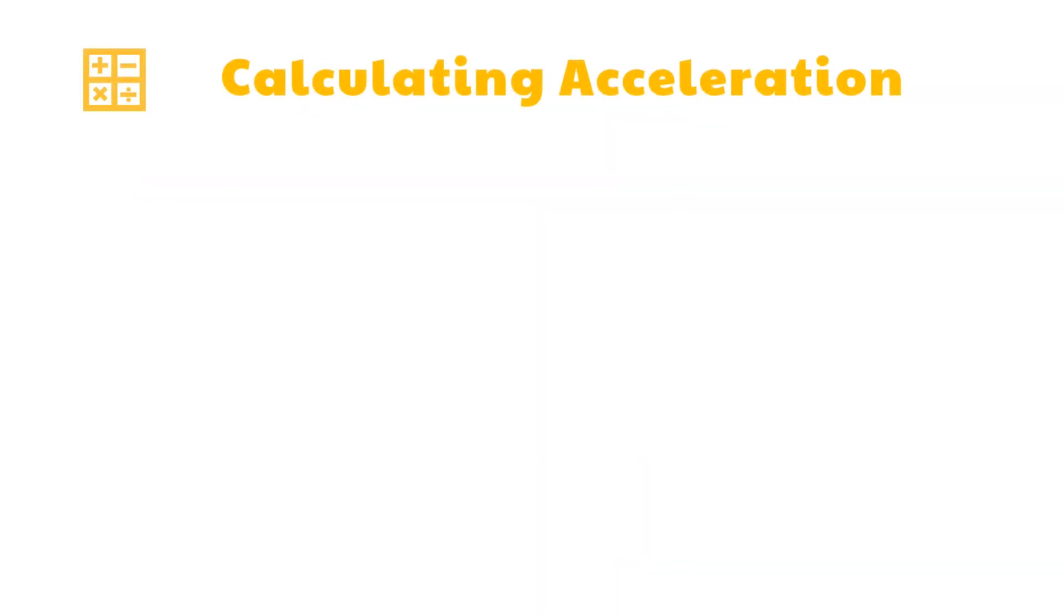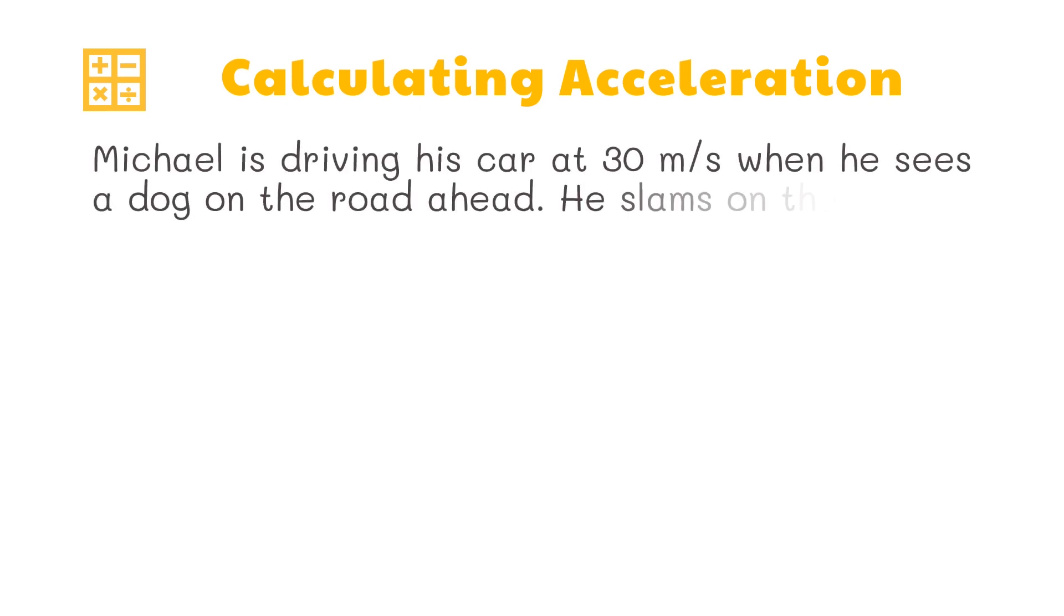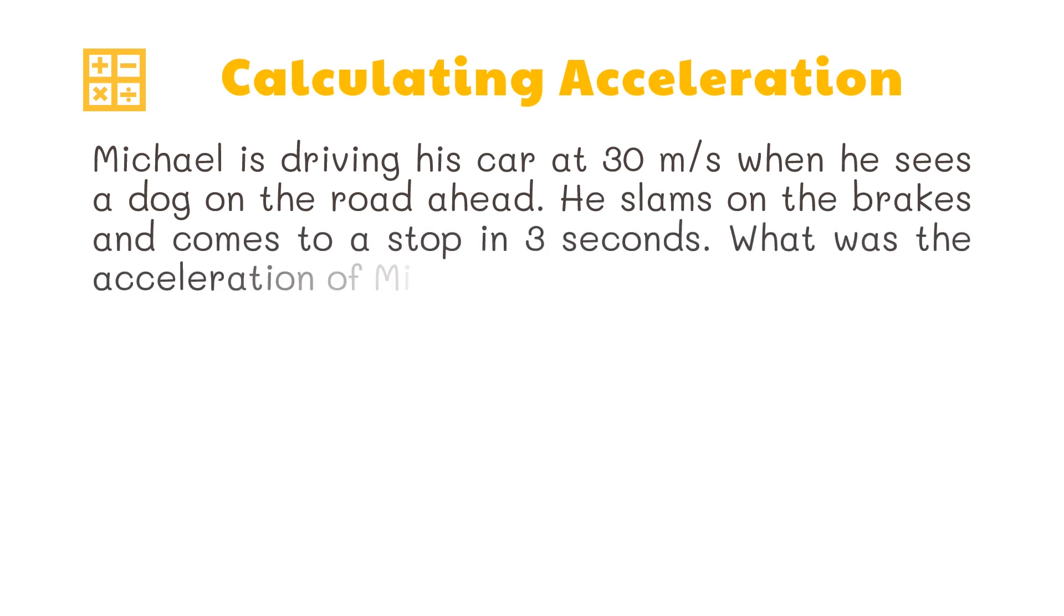Let's try calculating for acceleration. Michael is driving his car at 30 meters per second when he sees a dog on the road ahead. He slams on the brakes and comes to a stop in 3 seconds. What was the acceleration of Michael's car? So we have the given values of initial velocity of 30 meters per second, final velocity of 0 meters per second, and time of 3 seconds.